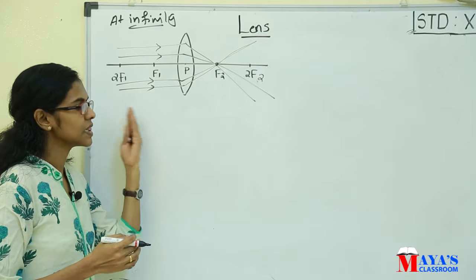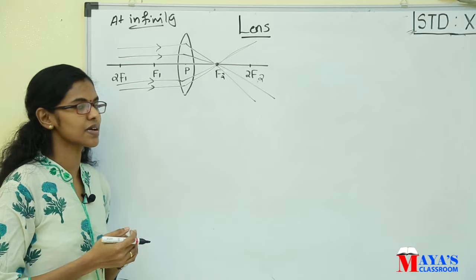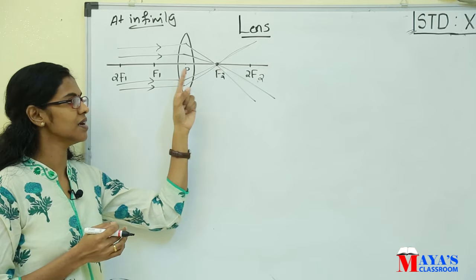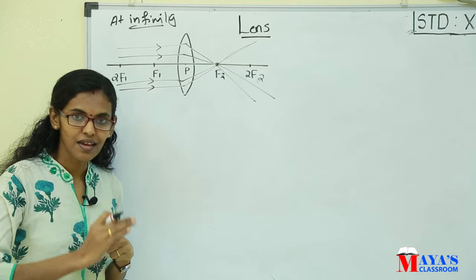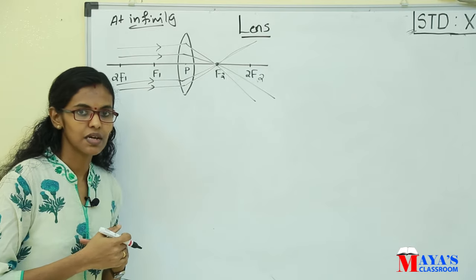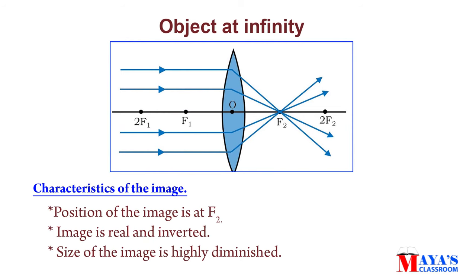What is the image? The image is at the focus. The image size is point size — highly diminished. It is very small. The image is real and inverted. Size of the image is highly diminished. Characteristics of the image: position of the image is F2, image is real and inverted, size of the image is highly diminished.